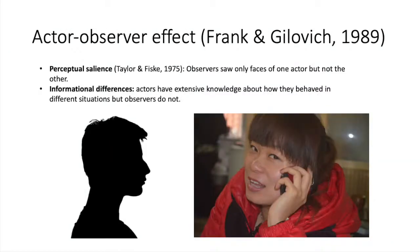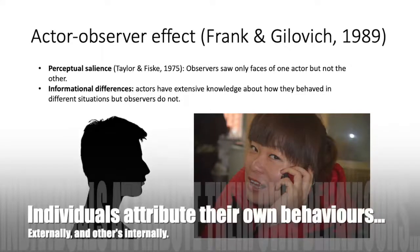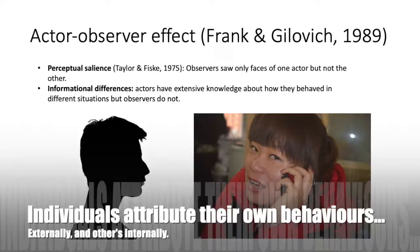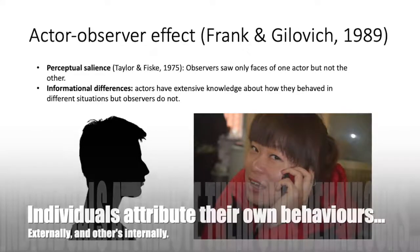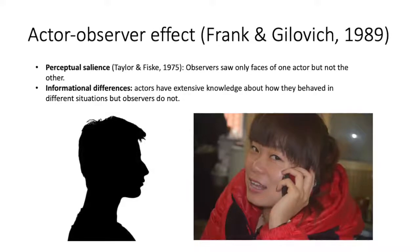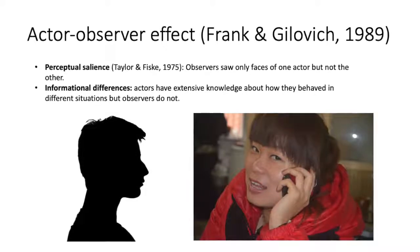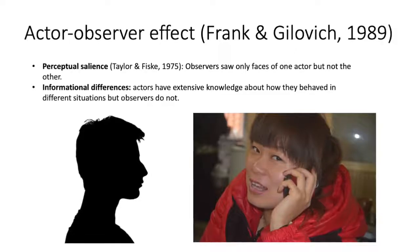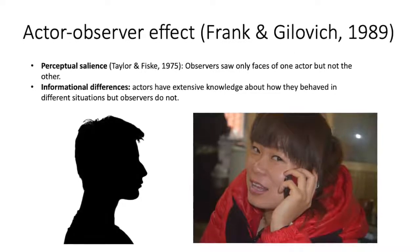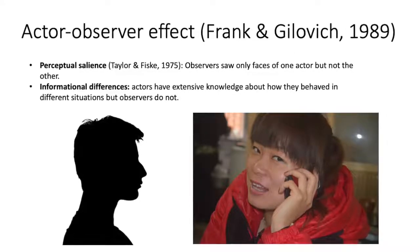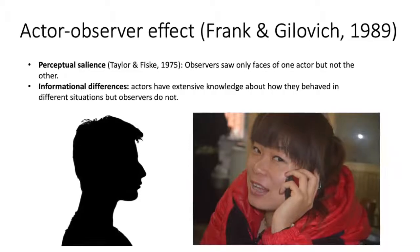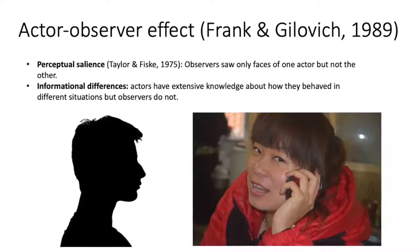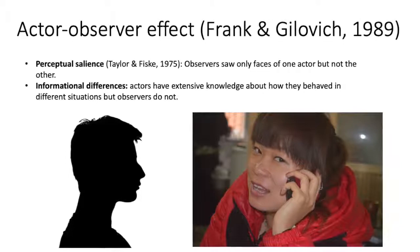Frank and Geolovic, in 1989, discovered the actor-observer effect, in which individuals attribute their own behaviours externally and others' behaviours internally. So they would blame their own behaviours on the situation at hand, while attributing the behaviours of others as being embedded within a certain disposition — being a part of them.